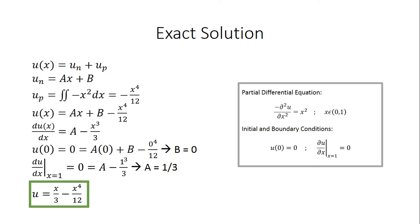We are going to begin by determining the exact solution. To do this we need the equation u of x equals u_n plus u_p, where u_n is the homogeneous solution and u_p is the particular solution. The homogeneous solution u_n takes the form ax plus b. The particular solution u_p equals the double integral of negative x squared dx, which comes from our PDE. Integrating twice gives us u_p equals negative x to the fourth over 12.